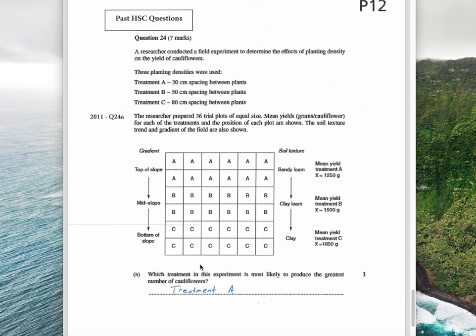At first you think to yourself, which treatment is most likely to produce the greatest number of cauliflowers? You think, well, 1850 is the highest yield, so surely it is C. But remember, this is the greatest number of cauliflowers. It doesn't ask about size of cauliflowers or weight, it just asks about the total number. Clearly from this density spacing, if you have your cauliflowers planted 20 centimeters apart, you're going to have more of them than if you plant them 15 centimeters apart, and you're going to have more of them than if you plant them 80 centimeters apart.